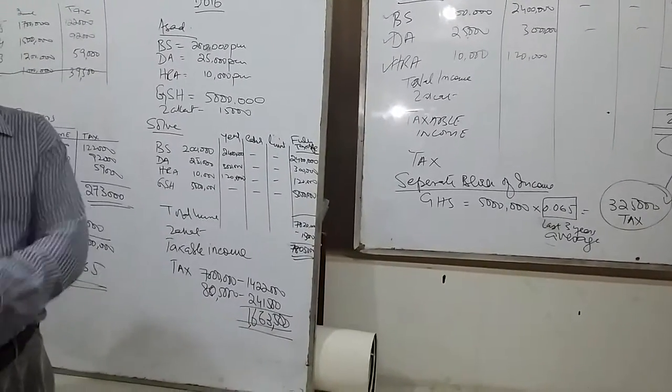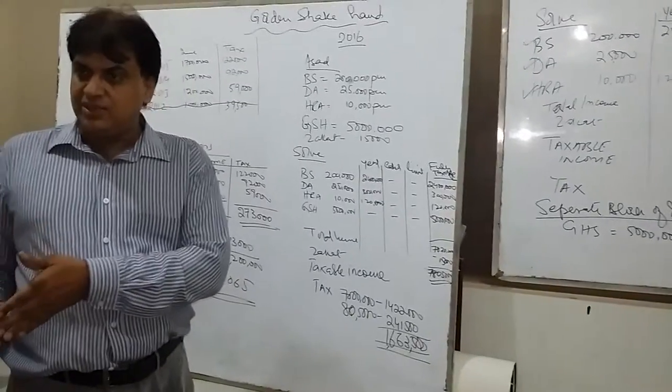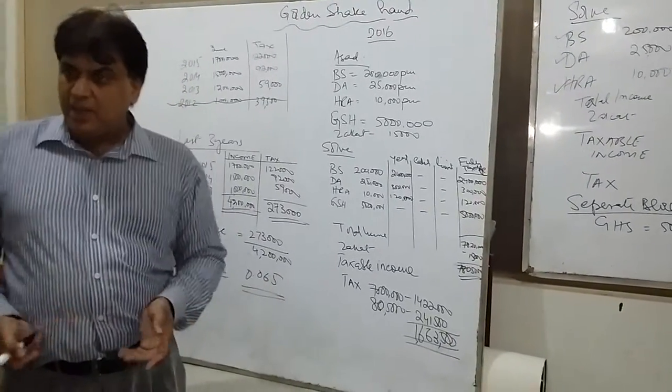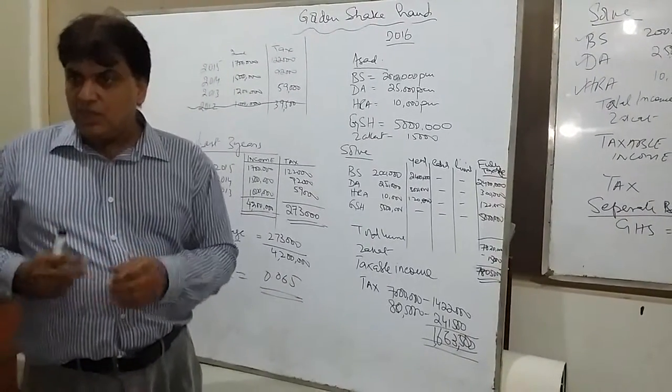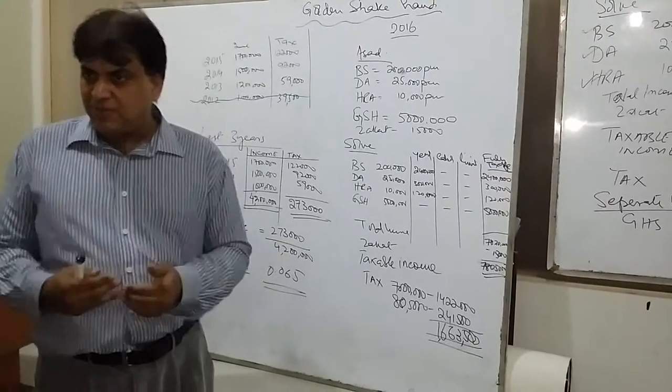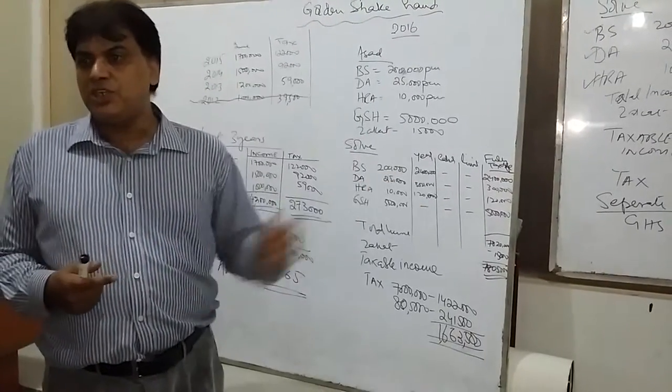This is an alternative to the normal salary. We will pay for the golden shake end. We will pay for the last three years. We will pay for income and tax average. We will pay for the rate of the golden shake end.